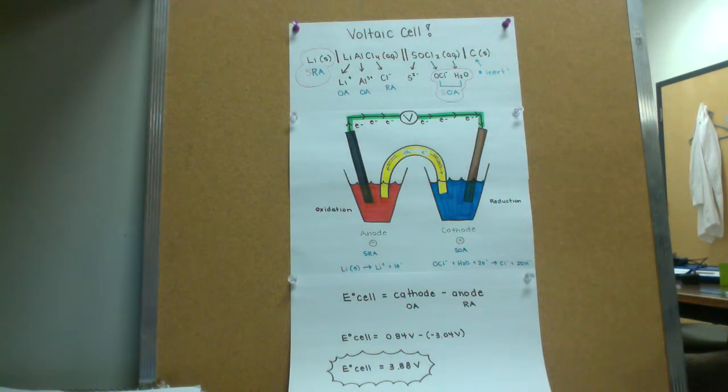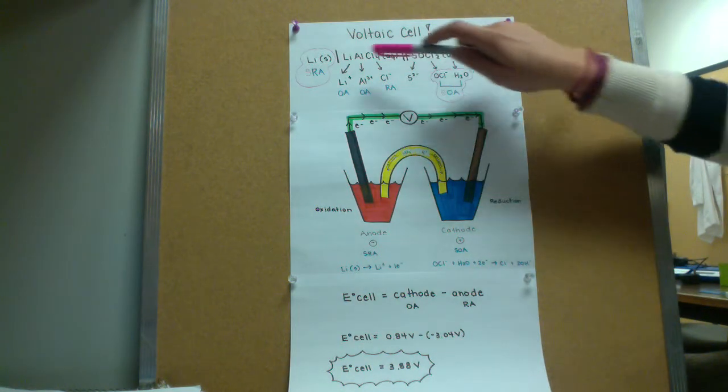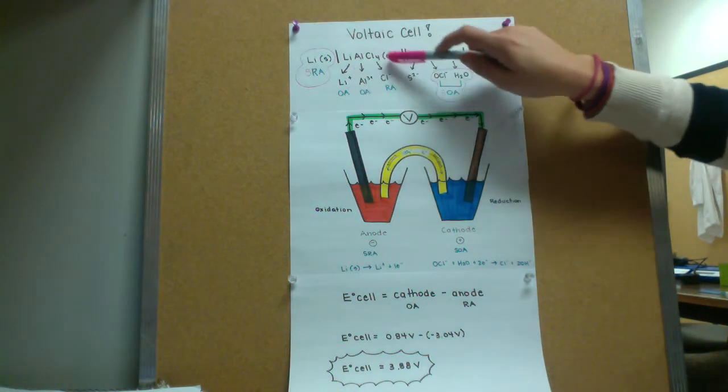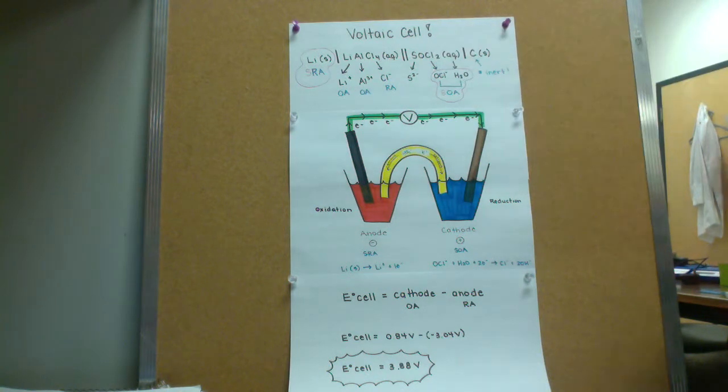The first step to any voltaic cell question is you have to dissociate the ionic compounds. And for this reason, we've dissociated the lithium tetrachloroaluminate and the thionyl chloride into its ions.